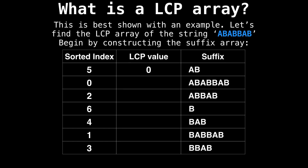Notice that the very first entry that we placed in our LCP array — that is the middle column — is zero. This is because this index is undefined, so we'll ignore it for now. To begin constructing our LCP array, let's begin by looking at the first two suffixes and seeing how many characters they have in common. We notice that this is two, so we place two in the first index of our LCP array.